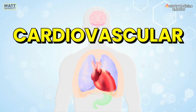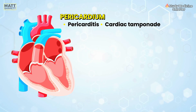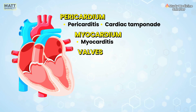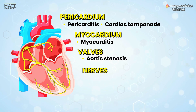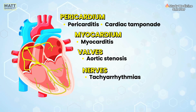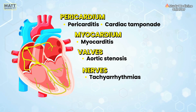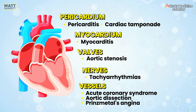Cardiovascular causes affect the heart and the major blood vessels. Think anatomically: the pericardium for pericarditis, the muscle layer to remind you of myocarditis, the valves to remember the angina of aortic stenosis, the bundle of His and nerve fibres to remind you that tachyarrhythmias can cause a painful sensation in the chest, and then the vessels — some of the most important ones here such as acute coronary syndrome and aortic dissection.